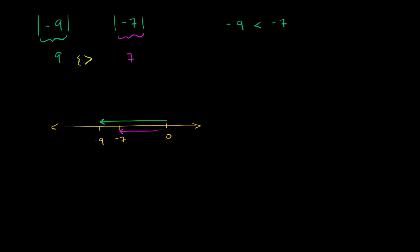Another way to think about it is that if you take the absolute value of a number, it's really just going to be the positive version of that number. So the absolute value of 9 equals 9, and the absolute value of negative 9 is also equal to 9. Visually, that's because both of these numbers are exactly 9 away from 0 — 9 is 9 to the right of 0, and negative 9 is 9 to the left of 0.